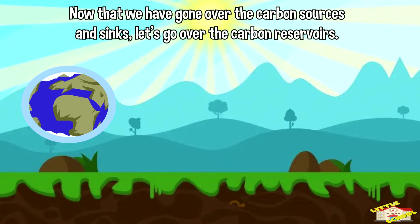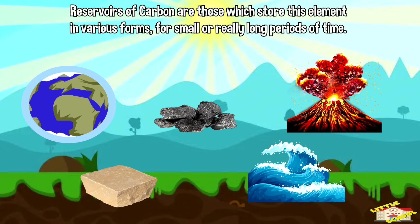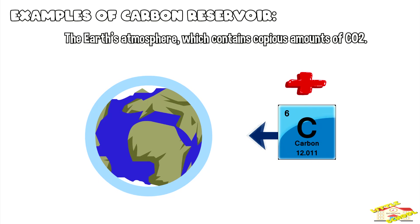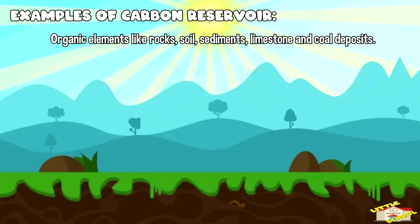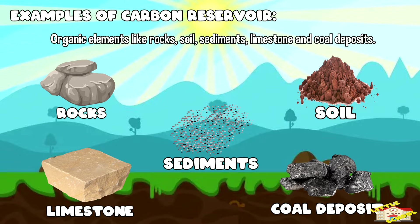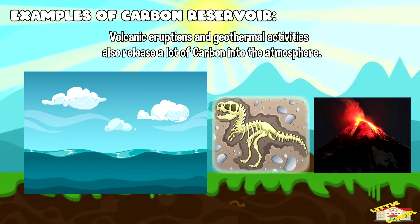Now let's go over the carbon reservoirs. Reservoirs of carbon are those which store this element in various forms for small or really long periods of time. Examples include the Earth's atmosphere, which contains copious amounts of CO2; organic elements like rocks, soil, sediments, limestone, and coal deposits; oceans, which contain a lot of dissolved carbon in various forms as well as in the form of fossil fuels; and volcanic eruptions and geothermal activities, which also release a lot of carbon into the atmosphere.